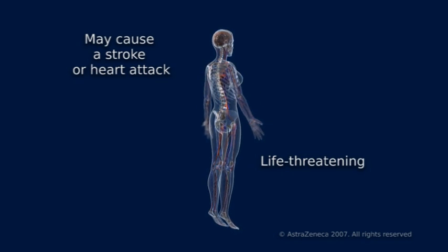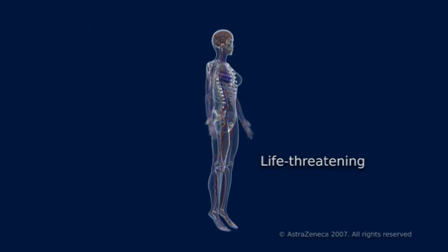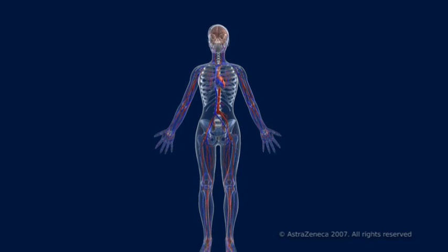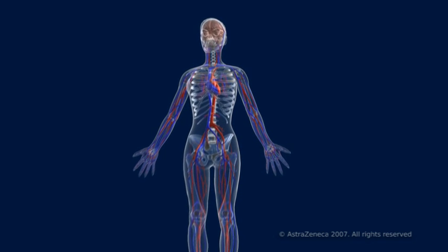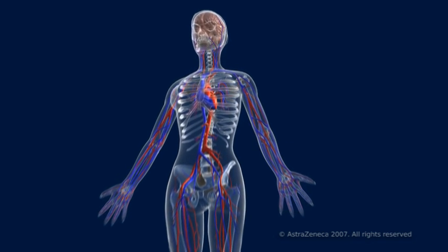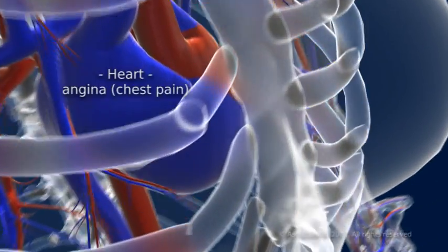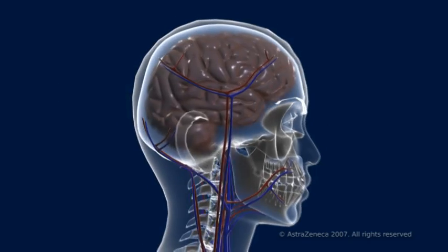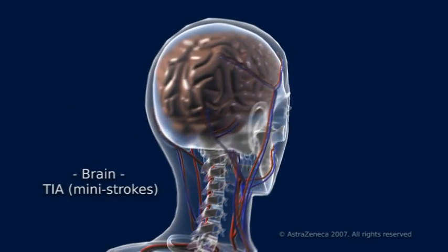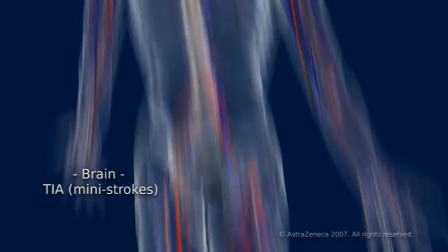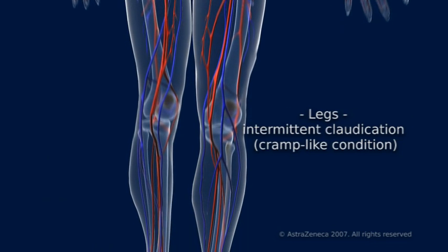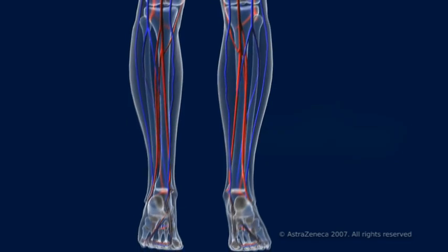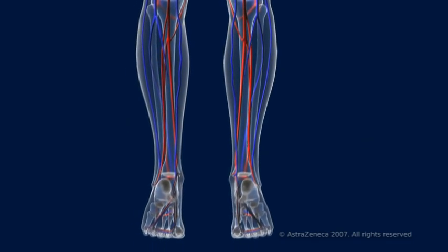Atherosclerosis is progressive, and it can take many years before symptoms appear. But some people can have no symptoms even with extensive atherosclerosis, and are at risk from sudden death. The symptoms depend on the site of the affected artery. In the heart, it can manifest as chest pains, angina. In the brain, as a type of mini-stroke called transient ischemic attacks. And to the legs, as a cramp-like condition called intermittent claudication, which can result in amputation of the limb.